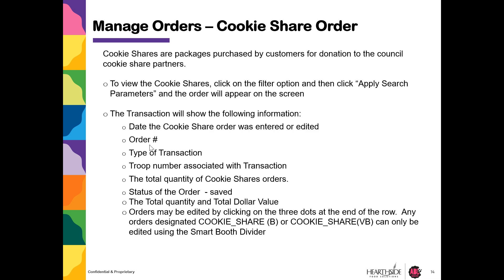Now let's look at Cookie Share Orders. Cookie Shares are packages purchased by customers for donation to the Council Cookie Share Partners. To view those orders, click the filter Cookie Share and apply search parameters. The transaction will show the date the order was entered, the order number, the type of transaction, your Troop number, and the total quantity of Cookie Share orders. Orders may be edited by clicking on the three dots at the end of the row. Any orders designated as Cookie Share (Booth) or Cookie Share (VB) Virtual Booth can only be edited using the Smart Booth divider.